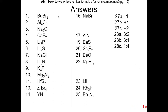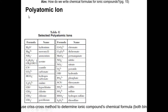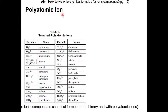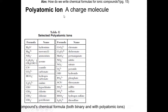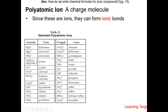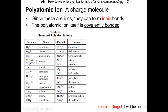Here are the answers to page 16. Now we are going to talk about polyatomic ions. Poly means many, atomic means atom, so this basically means molecule. A polyatomic ion is a charged molecule. Polyatomic ions are found on table E on your reference table, so you don't have to memorize it. Since these are ions, they can form ionic bonds, but the polyatomic ion itself is covalently bonded.